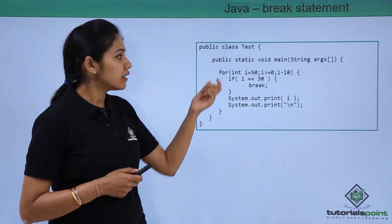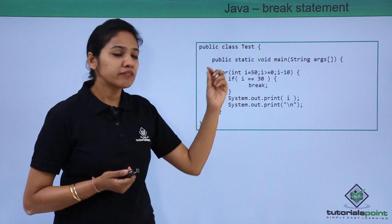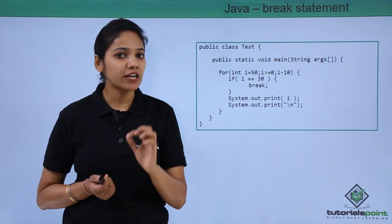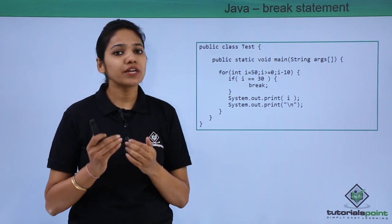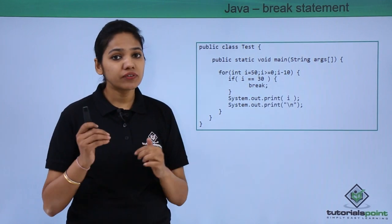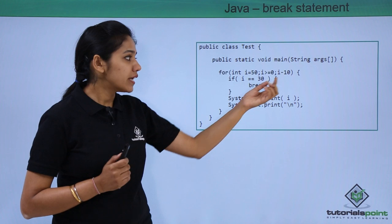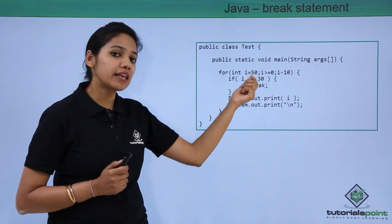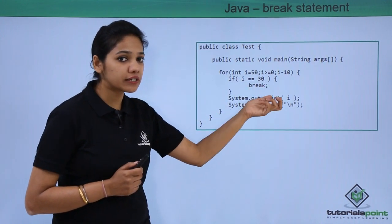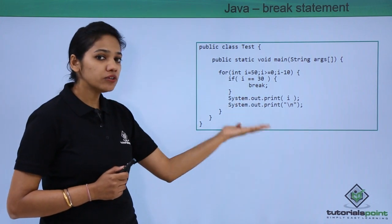Here we have a class called Test with the main method and we are trying to create a for loop. The first element of the for loop initializes the value of i as 50. Second, we check the condition if i is greater than or equal to 0. If yes, execute the block of statements. Inside the for loop, we have provided another condition that checks if the i value is equal to 30. If yes, terminate the program; if not, execute the rest of the statements.